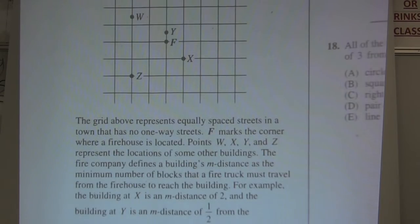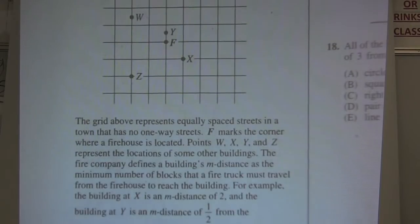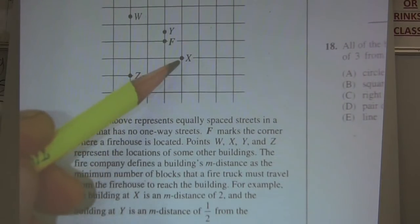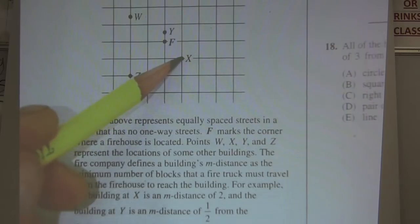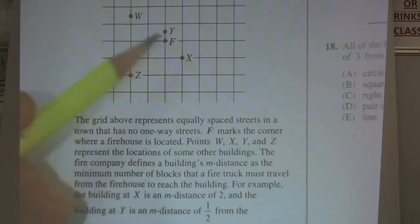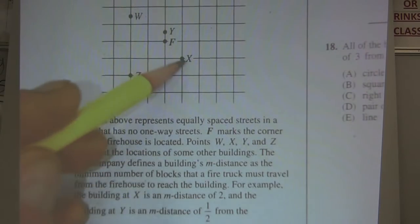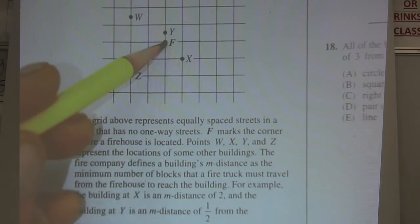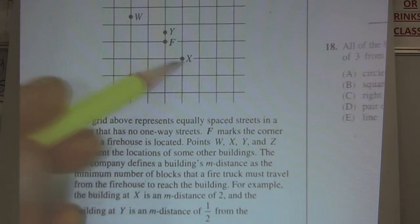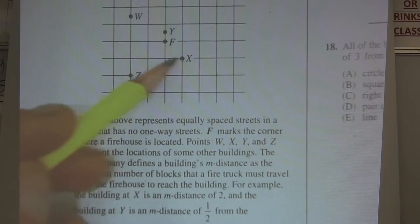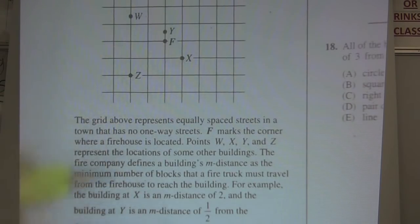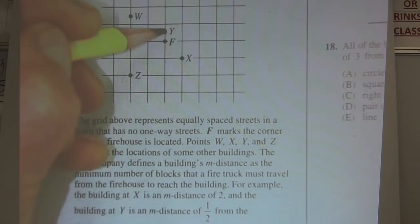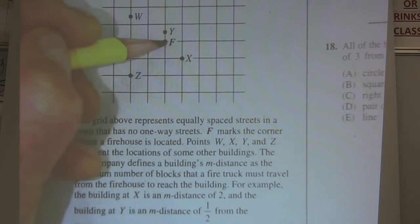For example, this building X right here is from F, is two blocks away, so it has an m-distance of 2. Look, it goes 1, 2. So there's two blocks away. It can't do any diagonal things. You just got to follow these streets right here. And the building Y has a distance of a half a block, so it's right here, a half of a block.